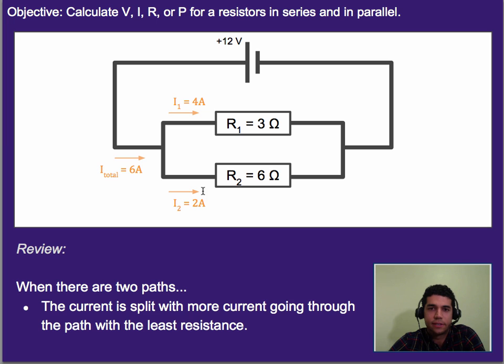Alright, let's look at, in this case, where we have two paths, one path going above, one going below, or two different resistors. A little bit of review. When we have this case, we know that the current splits, meaning if we have six amps of current going in, then up here we'll get four, and here we'll get two.